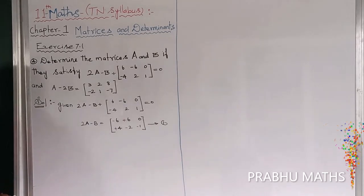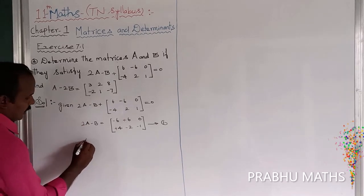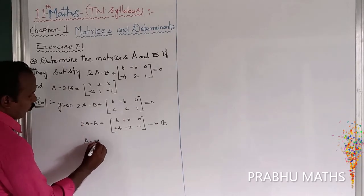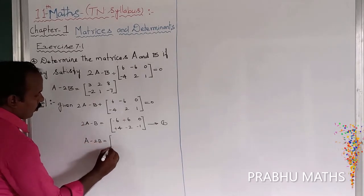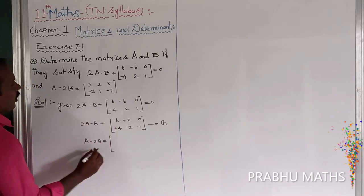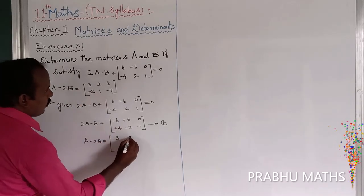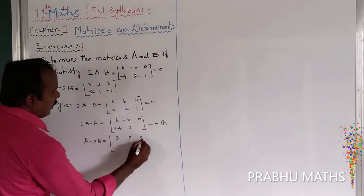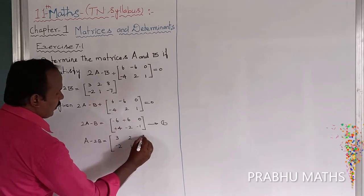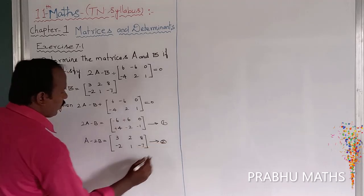Now we are going to the second equation. A minus 2B is equal to into 3, next one 2, 8, minus 2, 1, minus 7. This is equation number 2.